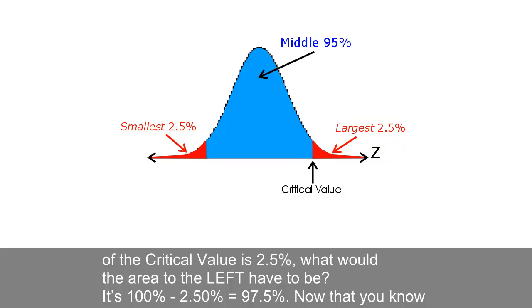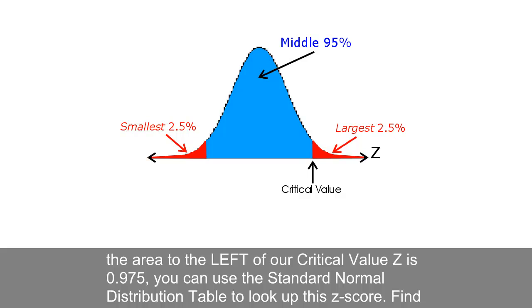It's 100% minus 2.5% equals 97.5%. Now that you know the area to the left of our critical value is 0.975,